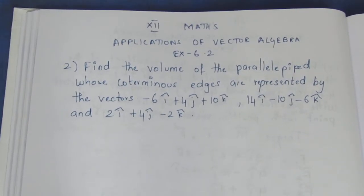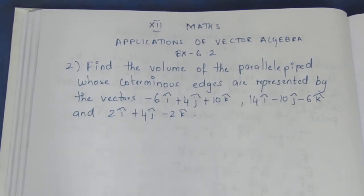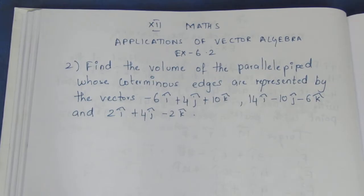Find the volume of the parallelepiped whose coterminus edges are represented by the vectors: minus 6i cap plus 4j cap plus 10k cap, 14i cap minus 10j cap minus 6k cap, and 2i cap plus 4j cap minus 2k cap.